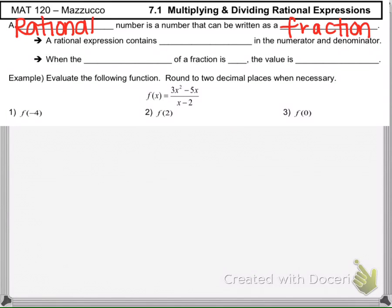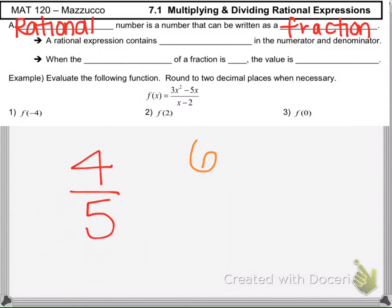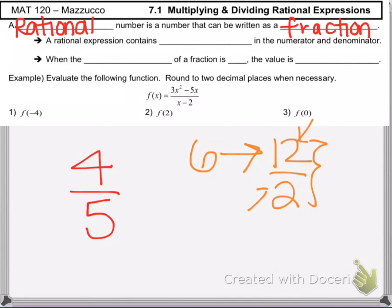The word rational means that a number can be written as a fraction. For example, 4 fifths is rational — it is a fraction. The number 6 is rational because it could be rewritten as 12 over 2, which has a numerator and a denominator with the value of 6. So anything that can be written with a numerator and denominator is considered rational. In this chapter, rational expressions will contain variables in the numerator and perhaps the denominator as well.